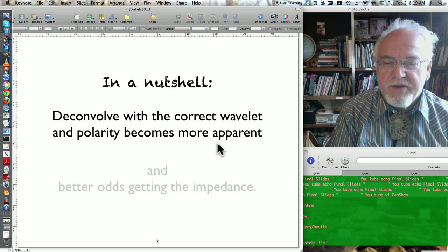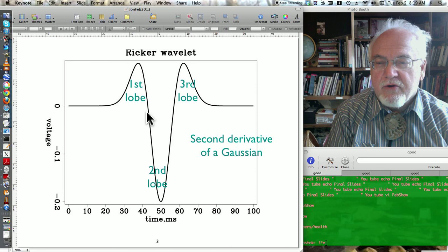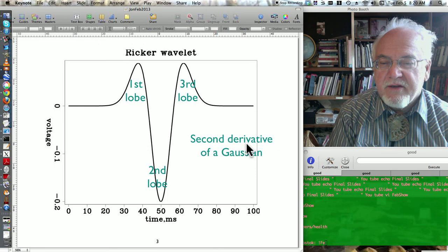I'll be talking a lot about the Ricker wavelet, which has three lobes: first lobe, second lobe, and third lobe. There's an analytic expression for this guy, which is the second derivative of a Gaussian.